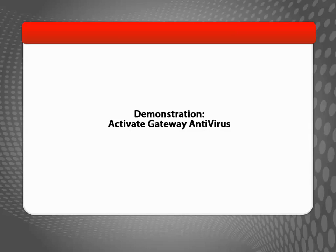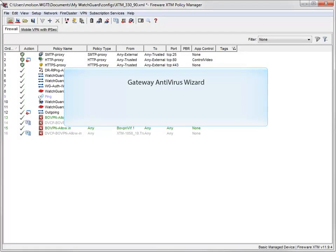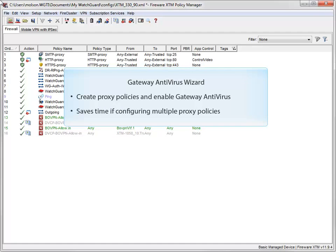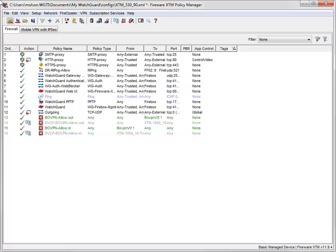There are two ways you can activate Gateway AV: with the Gateway Antivirus wizard, and from within your proxy policies themselves. I'll show you how to use the wizard in this video. To learn about activating Gateway Antivirus from within proxy policies, see the WatchGuard System Manager help. When you use the Activate Gateway Antivirus wizard, you can create proxy policies and enable Gateway AV for several proxies at the same time. If you plan to use Gateway AV for more than one proxy, you'll definitely save time by using the wizard.